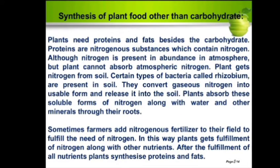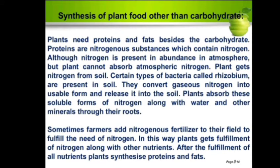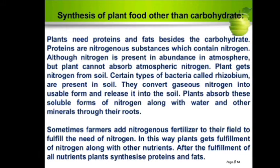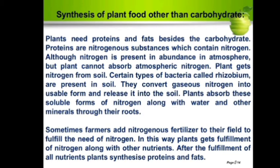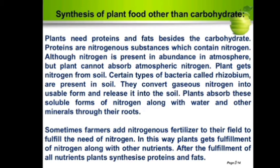Plants synthesize only glucose through the process of photosynthesis — it is a simple carbohydrate used for the synthesis of other nutrients. Complex carbohydrates such as sucrose and starch are also synthesized from simple carbohydrates. Starch is stored as food in different parts of the plant. Proteins are made from simple carbohydrates and nitrogen, and fats are also formed from simple carbohydrates. Glucose, synthesized by photosynthesis, is thus the basis for all these nutrients.